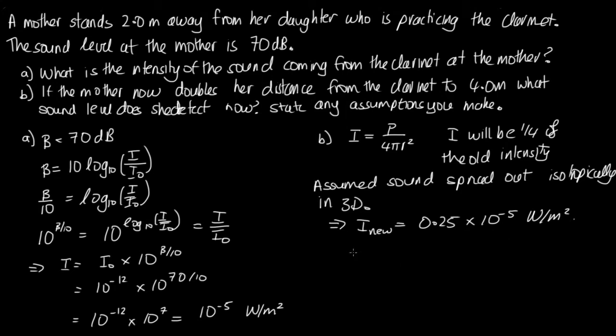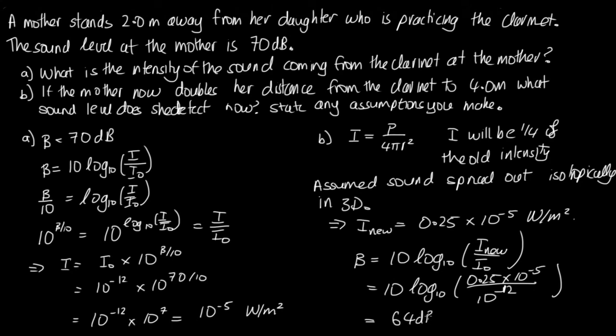Now we can calculate the sound level just by substituting into this equation here for the sound level. So beta is equal to 10 log to the base 10 of I new on I0, and so this is equal to 10 log to the base 10. We've got 0.25 times 10 to the minus 5 over 10 to the minus 12. Solving this on the calculator using the log button with log written on it, not ln the natural log, because this is log to the base 10. We end up with 64 decibels and that's given to two significant figures.